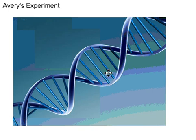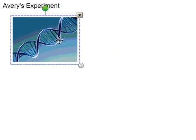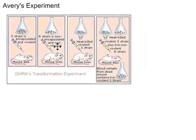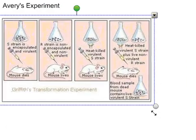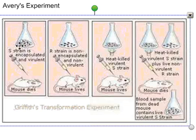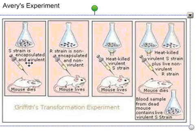Let's start with a recap of Griffith's experiment. In Griffith's experiment, he had two strains of bacteria: an S strain and an R strain. The S strain would kill you and the R strain would not. He put the S strain in a mouse — the mouse died. He put the R strain in the mouse — the mouse lived. He killed the S strain and put it in the mouse, and since the S strain was dead, it didn't hurt the mouse, so the mouse lived.